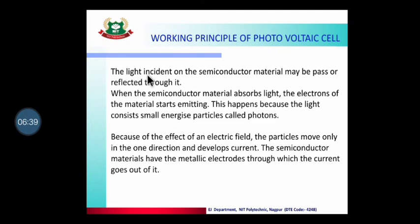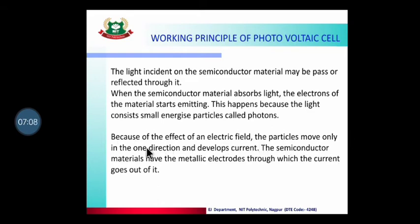The light incident on the semiconductor material may be passed or reflected through it. When the semiconductor material absorbs light, electrons of the material start emitting, because light consists of small energy particles called photons. Because of the effect of the electric field, the particles move in one direction and develop a current. The semiconductor materials have metallic electrodes through which the current goes out — this is the metallic contact.